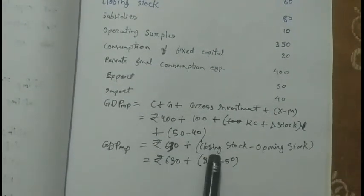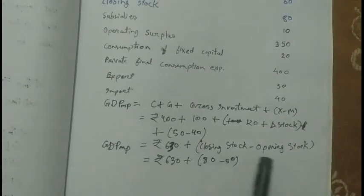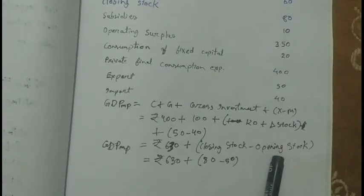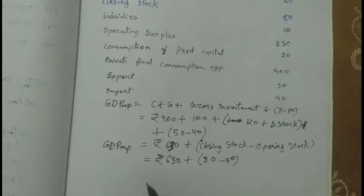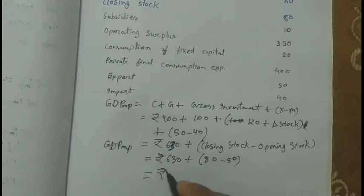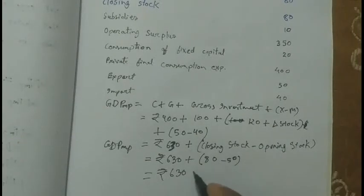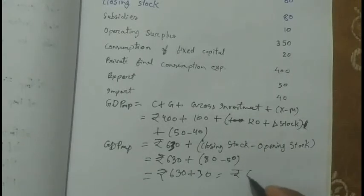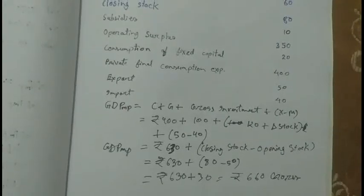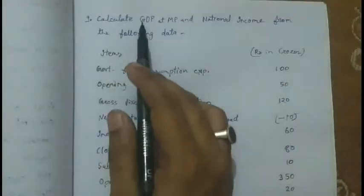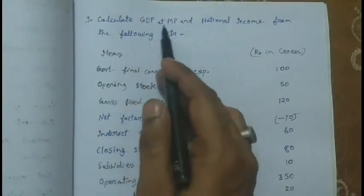Now solving: fixed investment is 610. Closing stock minus opening stock: closing stock 80 minus opening stock 50, so delta stock equals 30. So gross investment equals 610 plus 30 equals 640. Adding net exports: GDPMP equals 630 plus 30 equals Rs. 660 crores. So the first answer — GDPMP — is calculated.